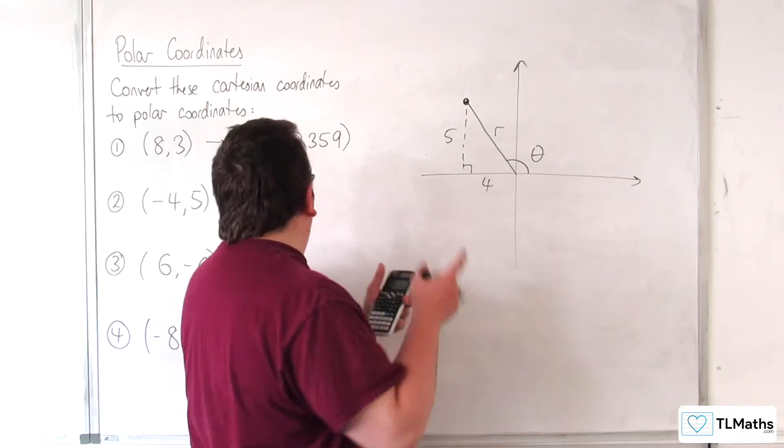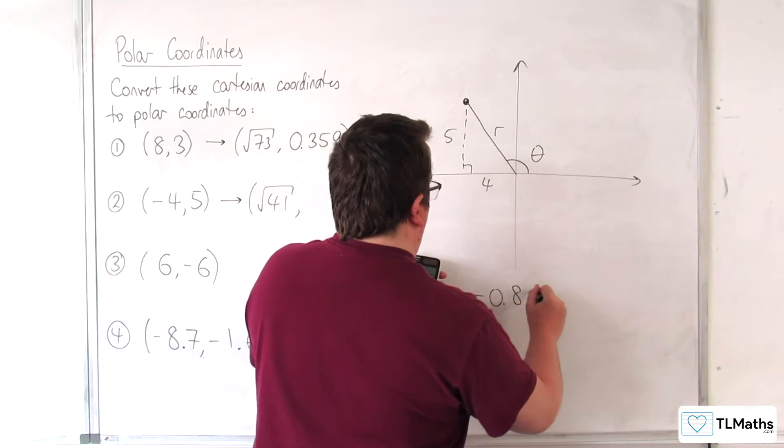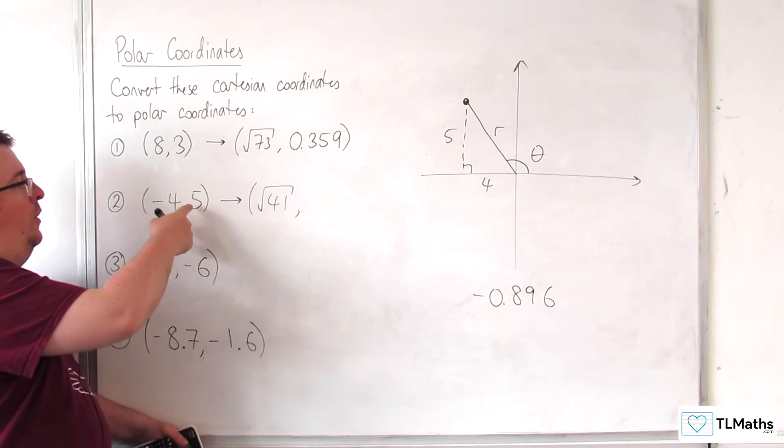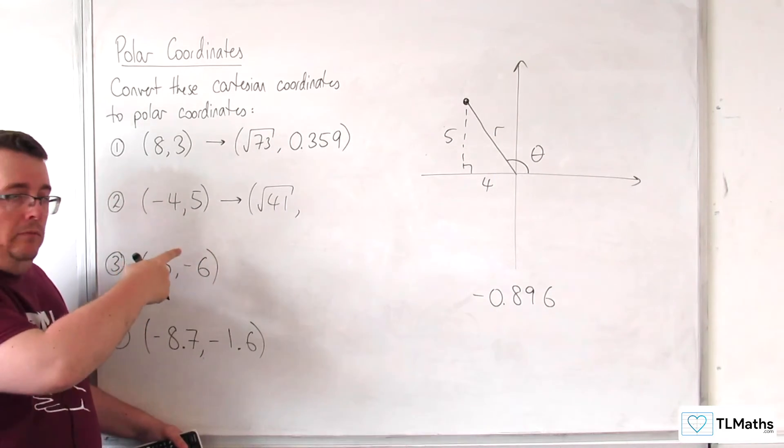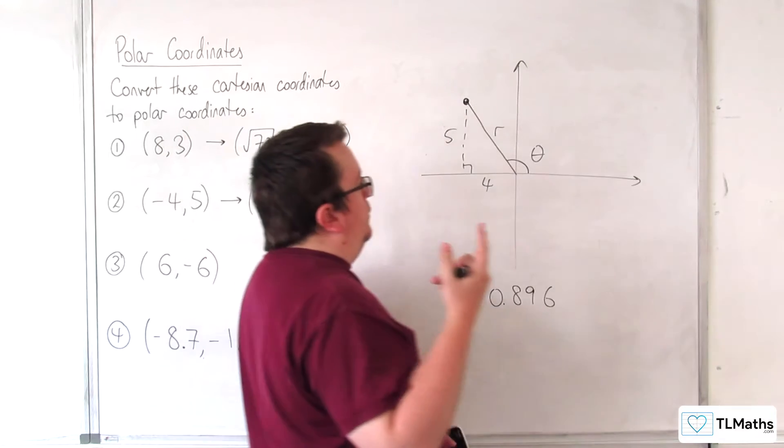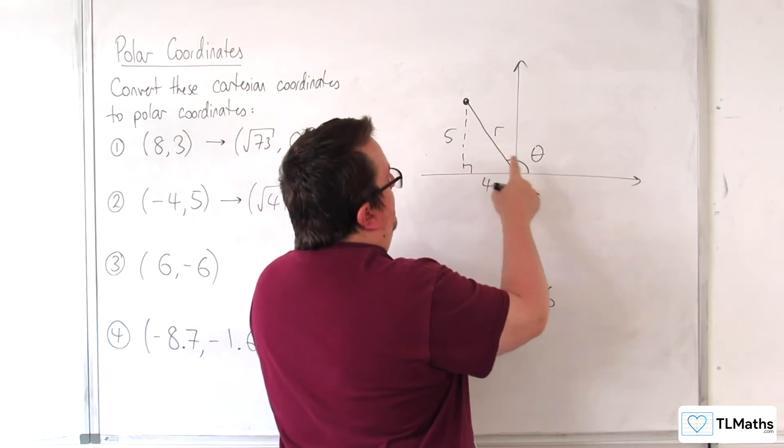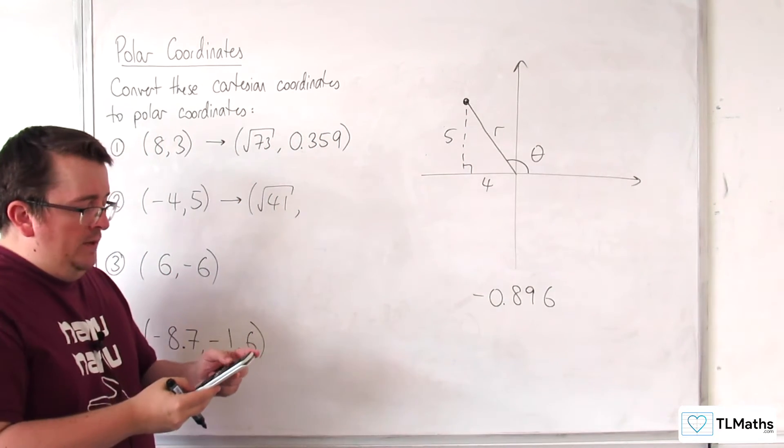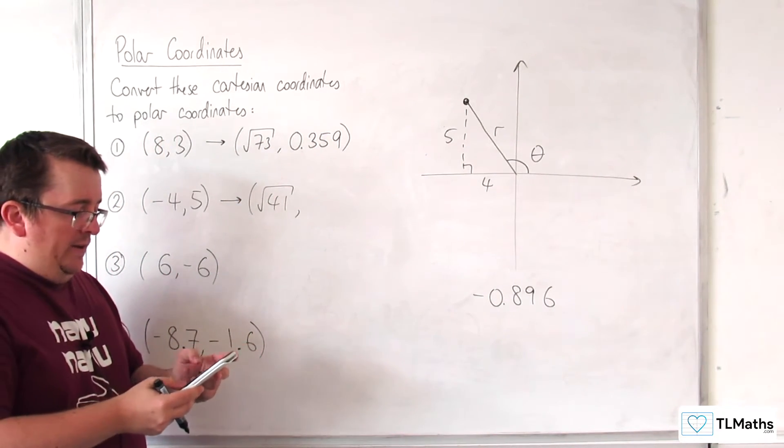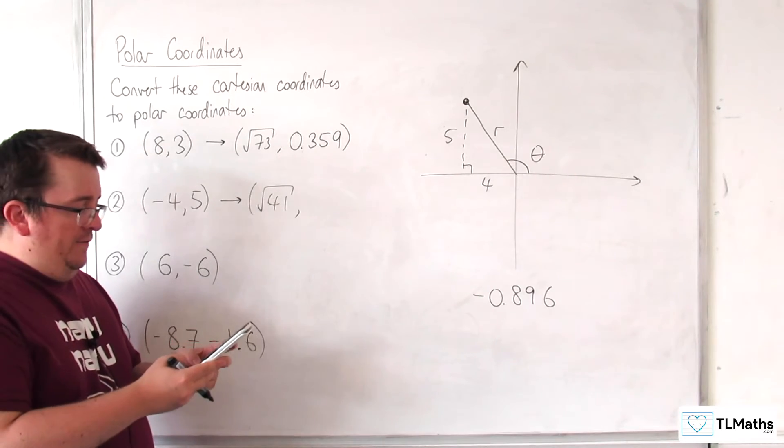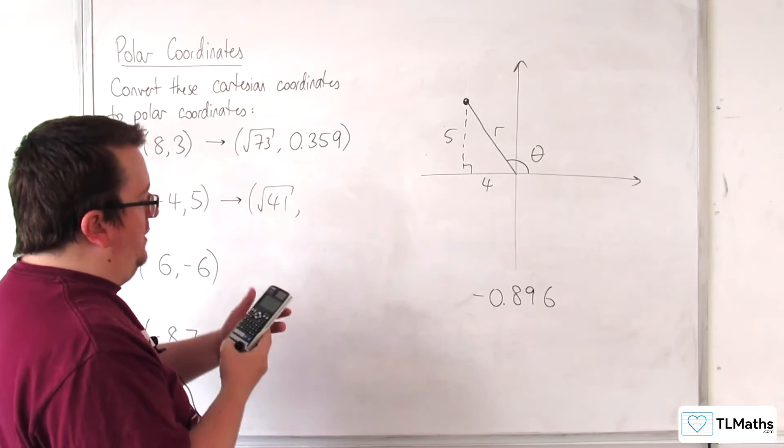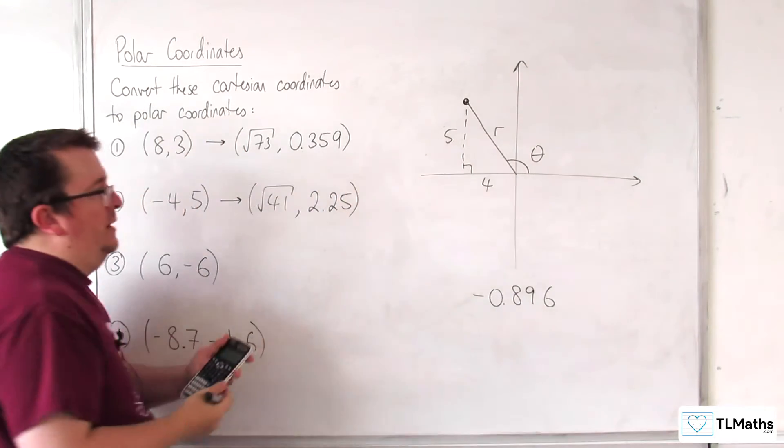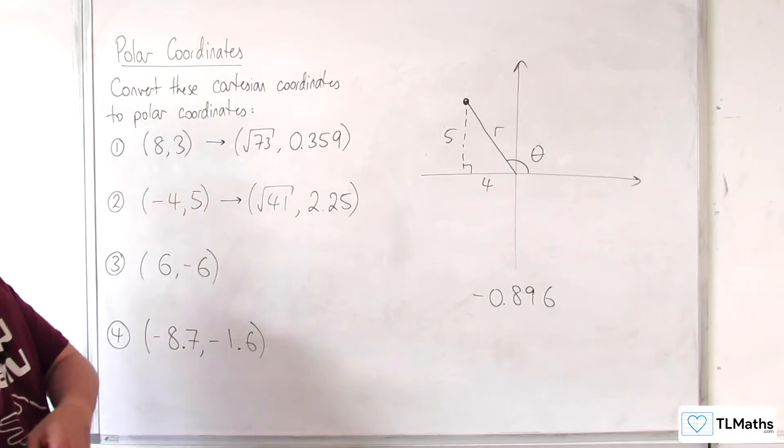So that's just from doing minus 0.896 if we just do inverse tan of y over x. Now, of course, the alternative is to do pi, take away this angle here, which is the inverse tan of 5 over 4. So pi take away inverse tan of 5 over 4, and that gets us 2.25 to 3 significant figures. So that's our correct answer here.